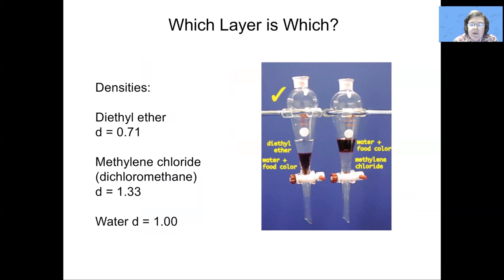Once we have our separatory funnel and our two different layers, and we've accomplished our extraction and separated two compounds into those two different layers, we need to know what is where. To do that, we need to know which solvent we used and what its density was. If water has a density of around one, and most aqueous layers have densities close to one, some solvents are more dense than water, like dichloromethane, and so you expect them to be on the bottom. And some solvents are less dense than water, like diethyl ether, and so you'd expect them to float on water.